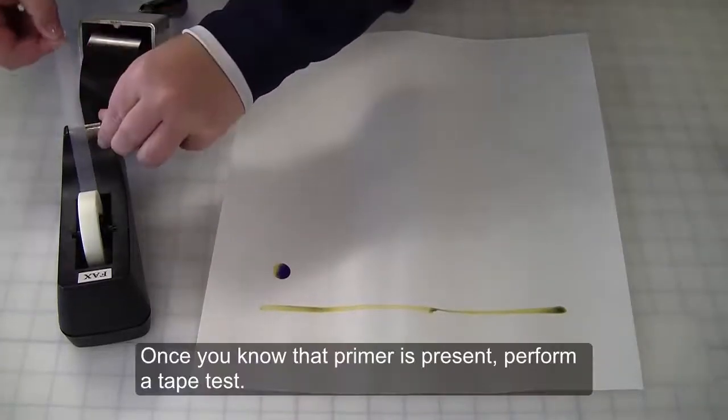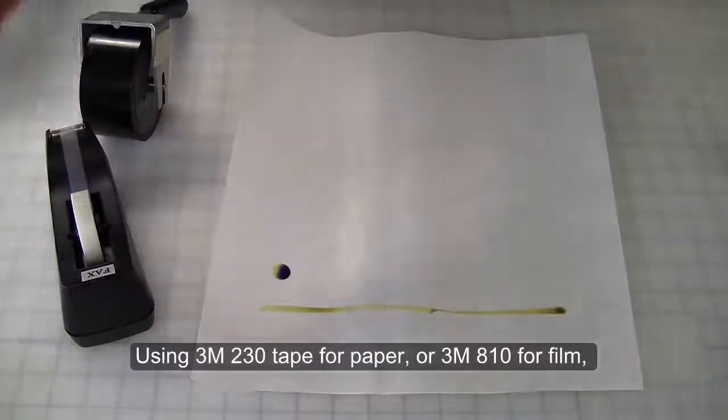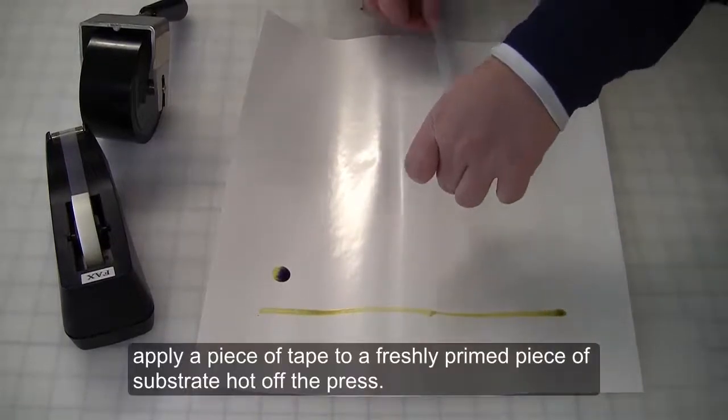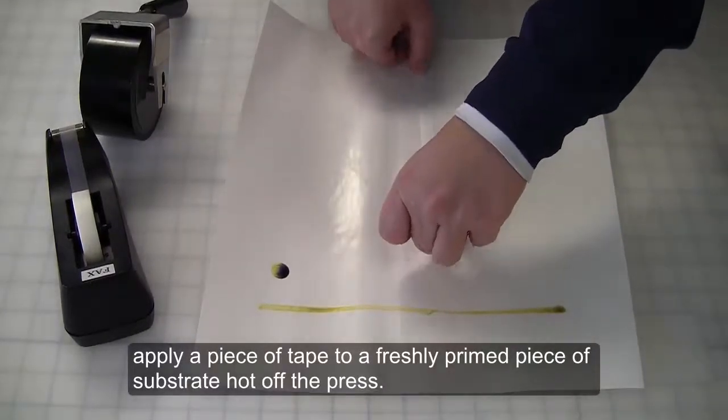Once you know that primer is present, perform a tape test. Using 3M230 tape for paper or 3M810 for film, apply a piece of tape to a freshly primed piece of substrate hot off the press.